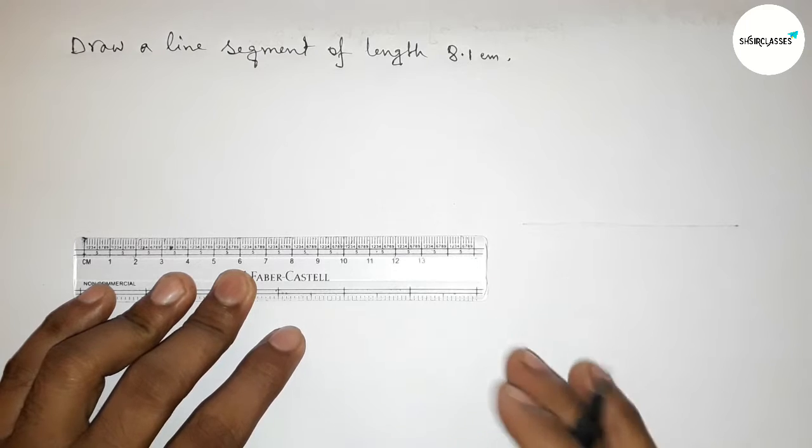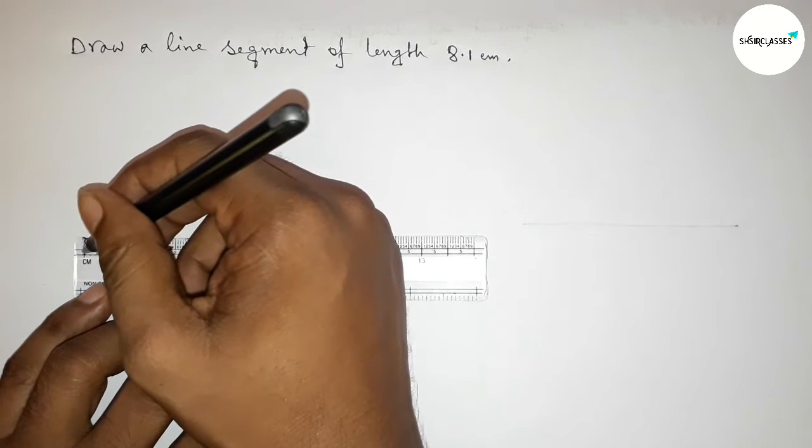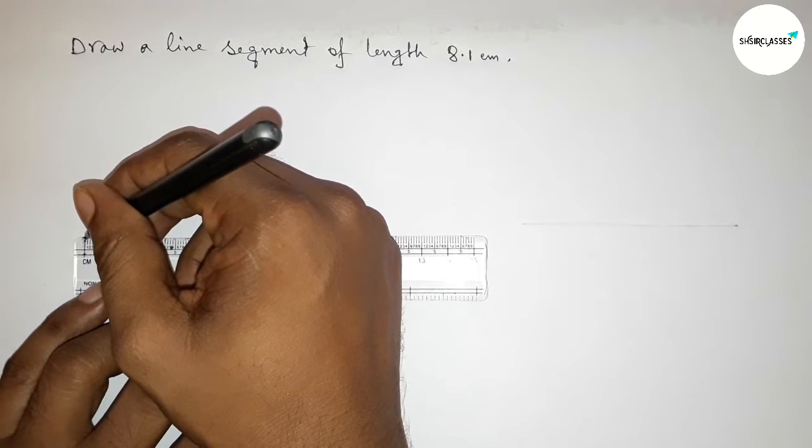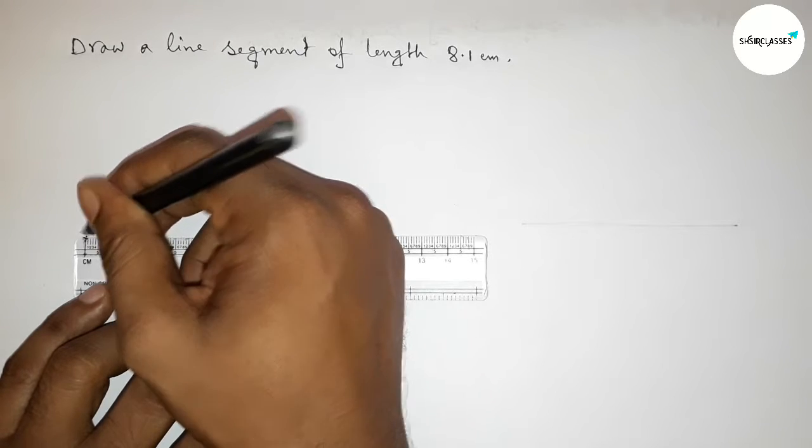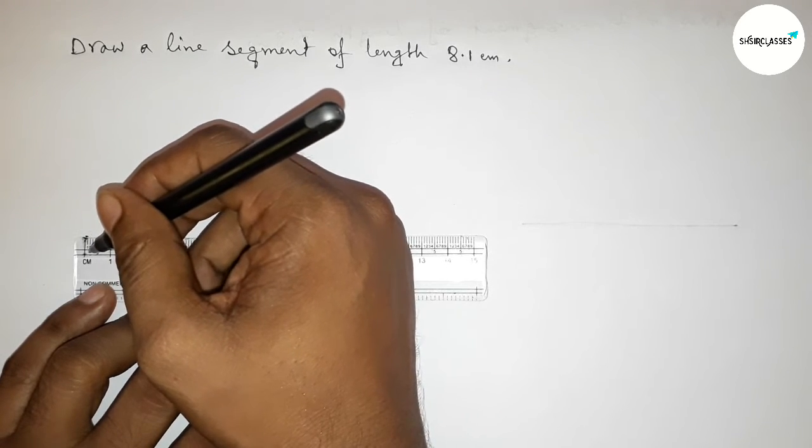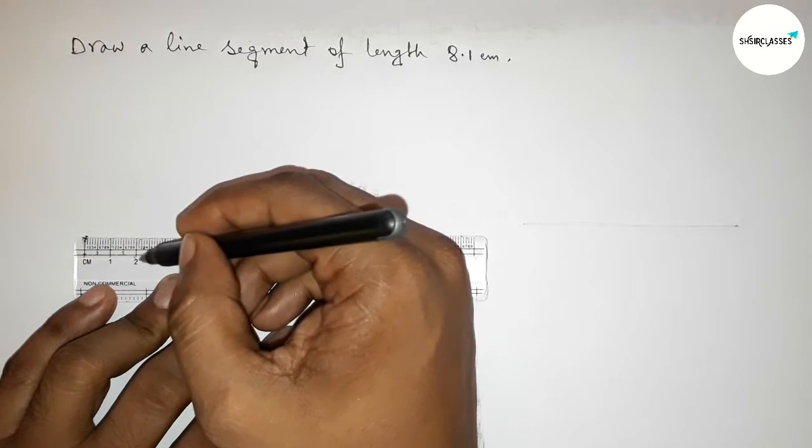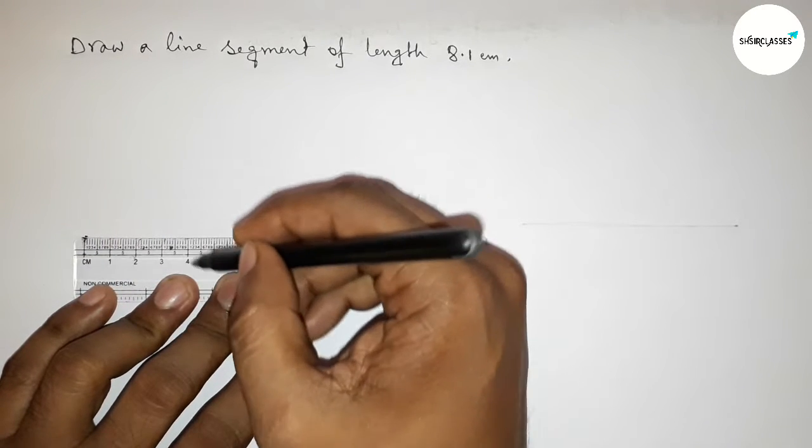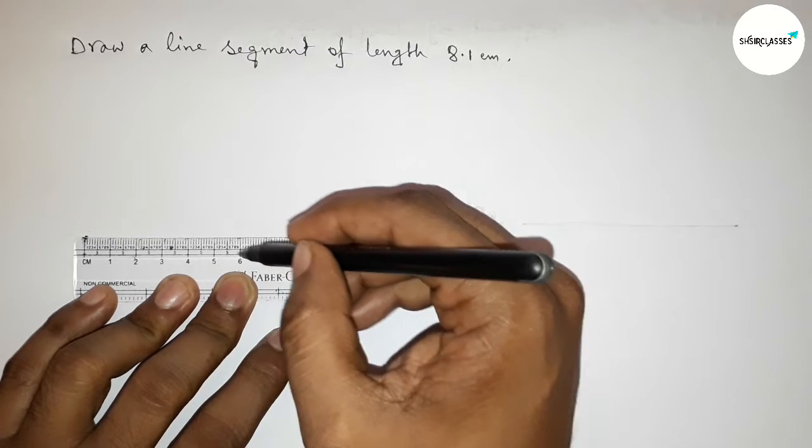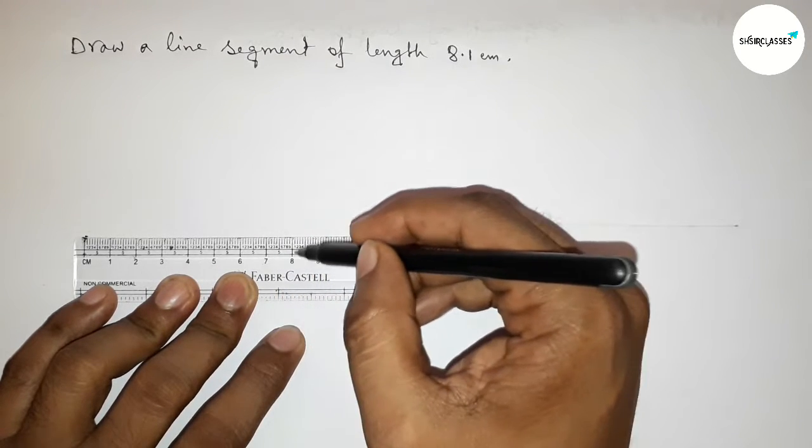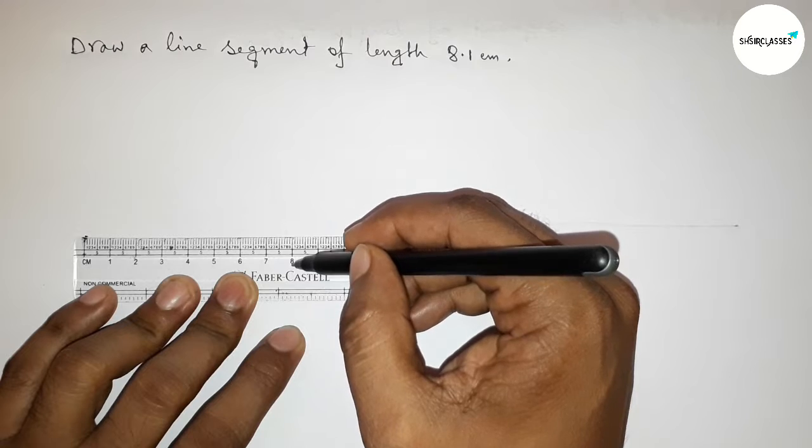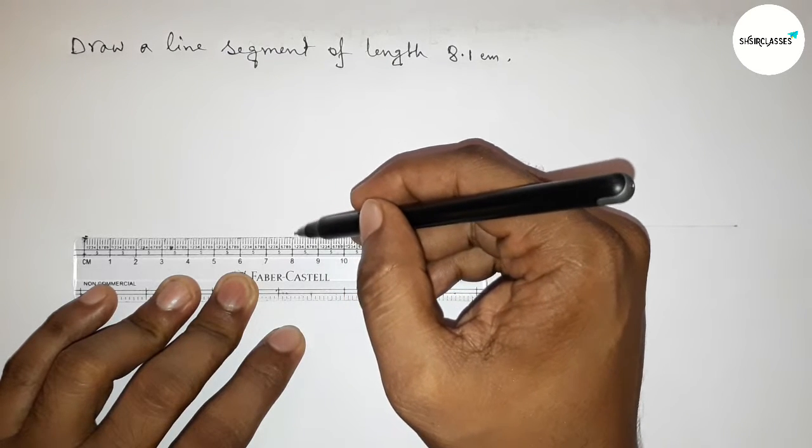Then measure the length 8.1 centimeters. This is starting zero, so first marking here the starting zero, then counting. So this is zero, one, two, three, four, five, six, seven. This is eight, so this is eight and this is eight point one centimeters.